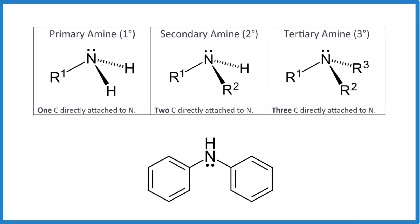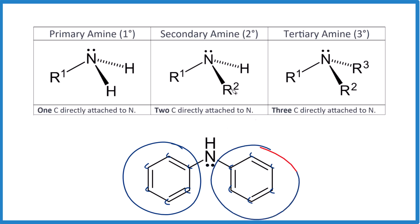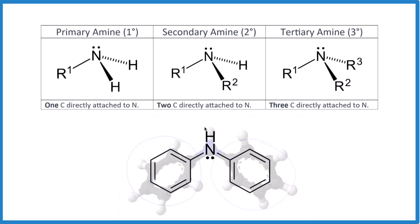How about this one? And remember, all of these are carbons. We have a hydrogen and then two groups of carbons — that's got to be a secondary amine. There's the hydrogen by itself, and these are the carbon groups on the side.